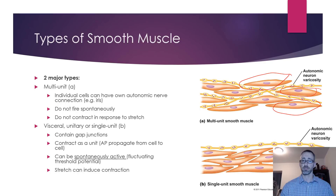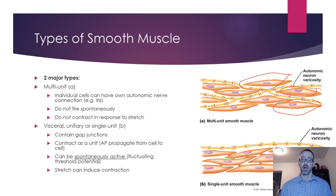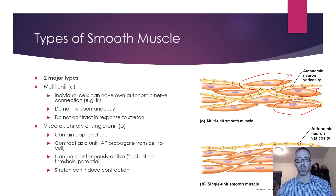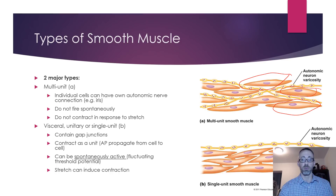Multi-unit smooth muscle cells do not fire spontaneously — they don't generate action potentials automatically — and they do not contract in response to stretch. So the smooth muscle in the bladder, which does respond to stretch, is not multi-unit. Most of the visceral organs contain single-unit (unitary) smooth muscle, which is the most abundant type.